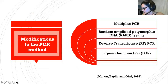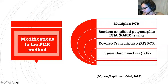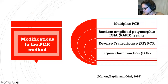Over the years, the PCR process has evolved. Menon and colleagues, in their article published in 1999, identify four examples of how PCR has been modified for different purposes. Multiplex PCR is a method where a number of DNA segments are multiplied at the same time. Random amplified polymorphic DNA typing determines the congruence of DNA, which is useful in comparing different samples of DNA, for example in forensics as DNA fingerprinting.